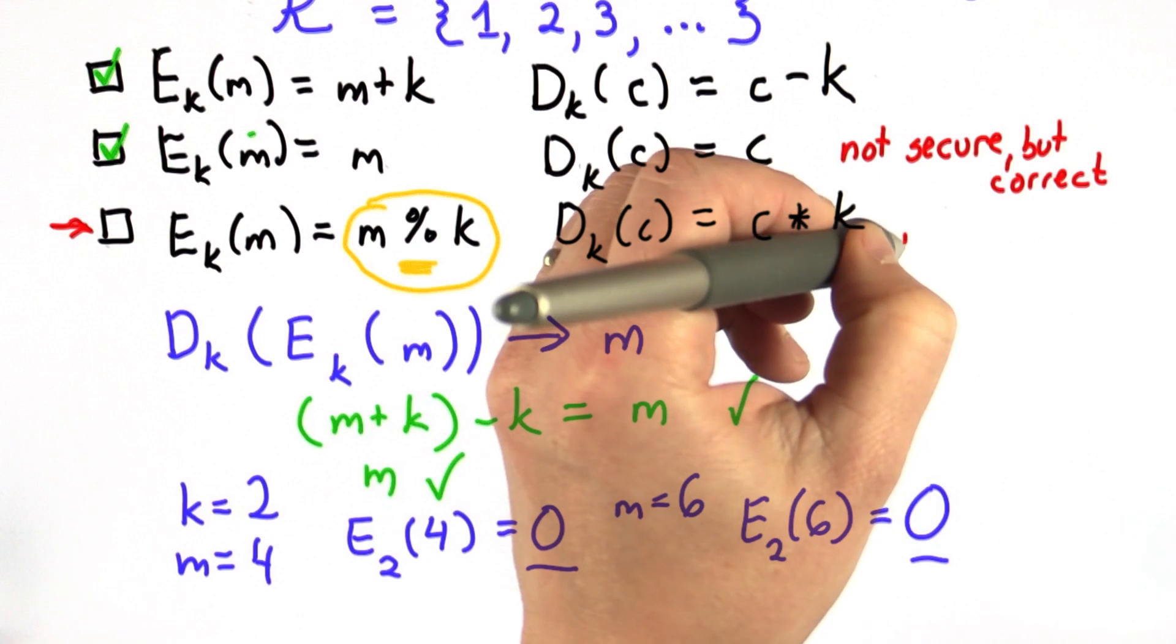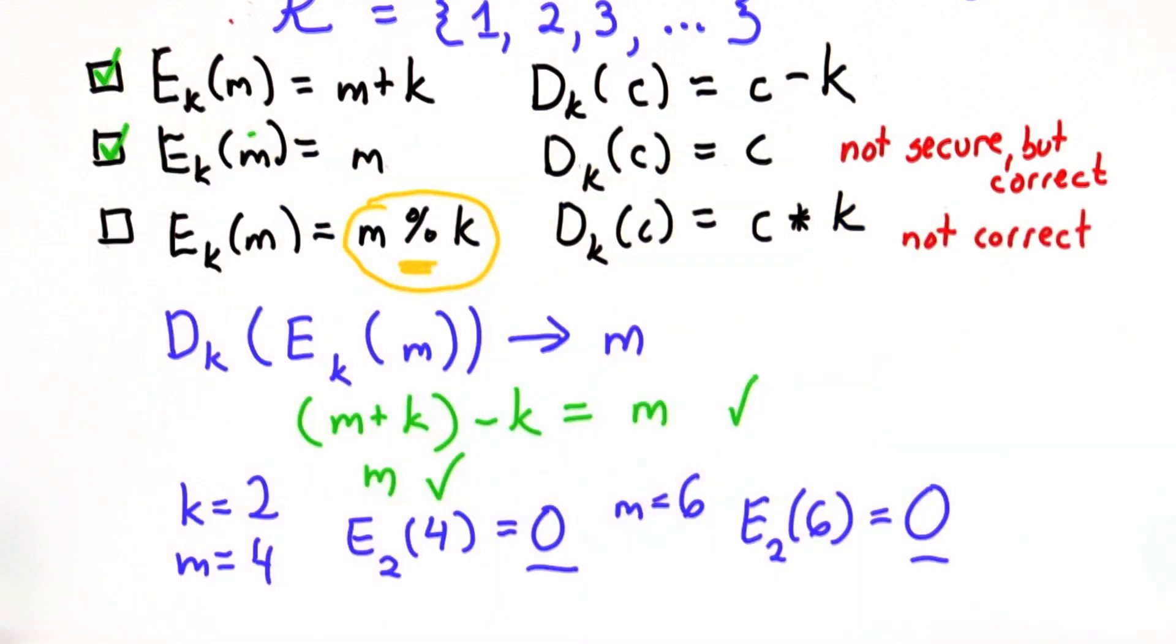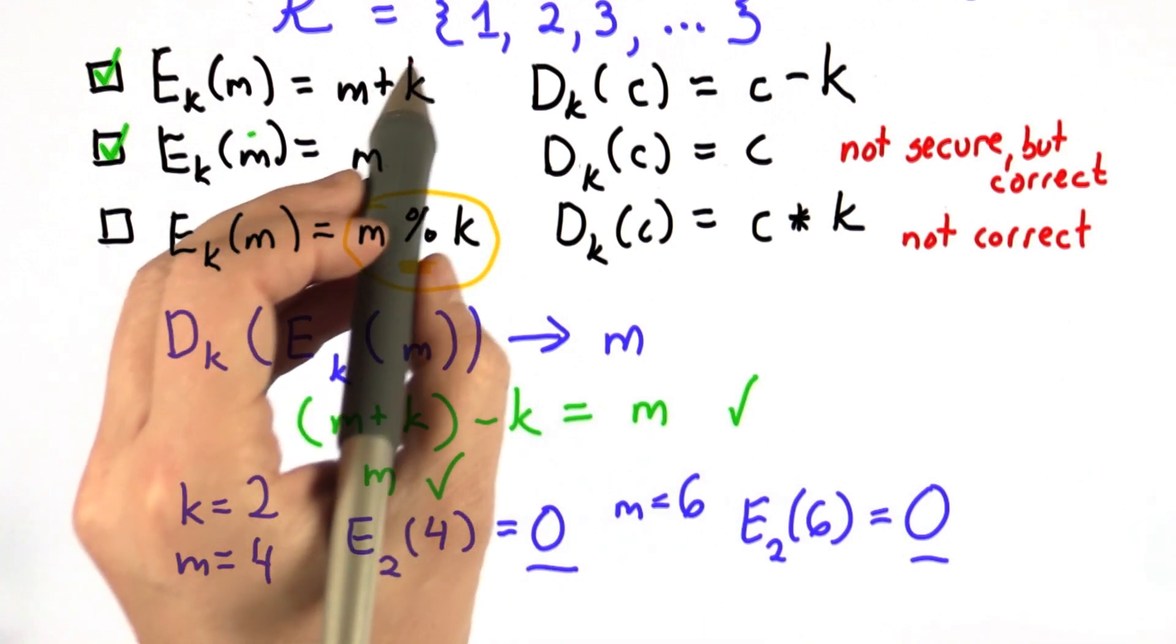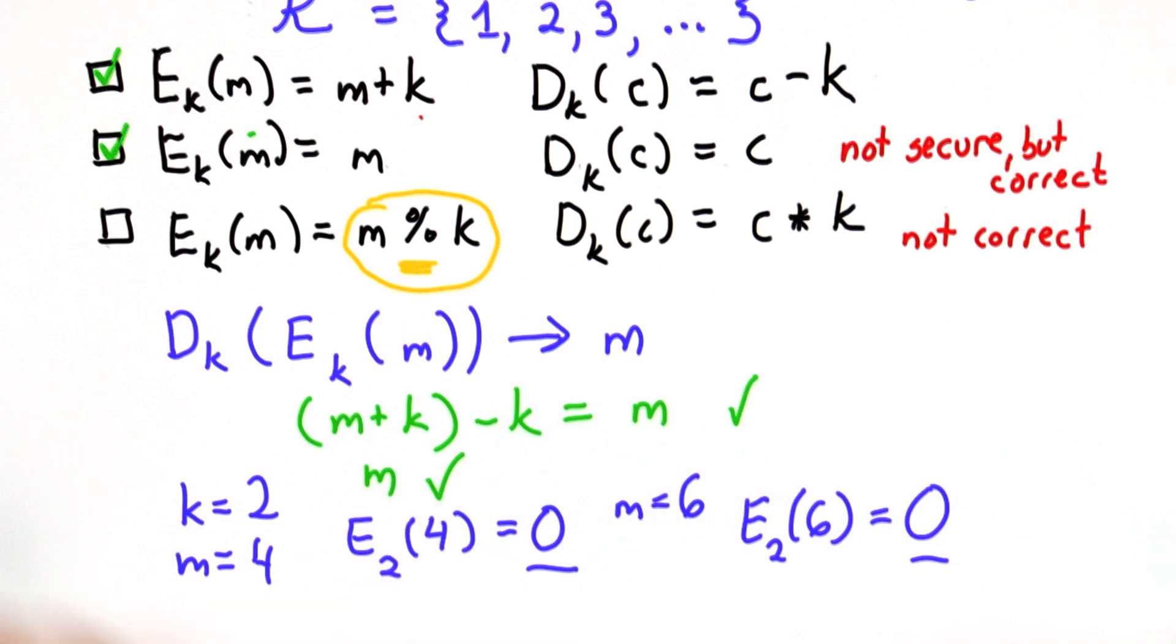But once it's not correct, we know it's not useful. The first one, as it is, is not secure, but it's actually pretty close to being secure. And if we combine the first one with a modulo operator and we never reuse keys, we'll end up with something that's perfectly secure. And that's what I'm going to talk about next. I'll introduce the first cipher that we'll talk about. And it's actually a cipher that is perfectly secure.